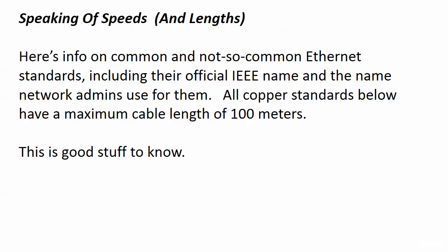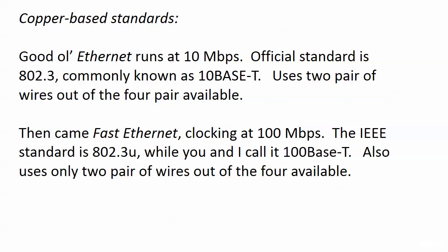Now let's look at some Ethernet standards. I'll give you the official IEEE name and the name that network admins actually use. All the copper standards we discuss have a maximum cable length of 100 meters — good to know for the field and likely to come up on your exam. Regular Ethernet runs at 10 Mbps; the official standard is 802.3, commonly known as 10BaseT. Ethernet uses two of the four pairs of wires available. Fast Ethernet clocks in at 100 Mbps — the IEEE standard is 802.3u; you can remember the U as standing for 'unbelievably fast.' We call it 100BaseT, and it also uses only two pairs of wires.